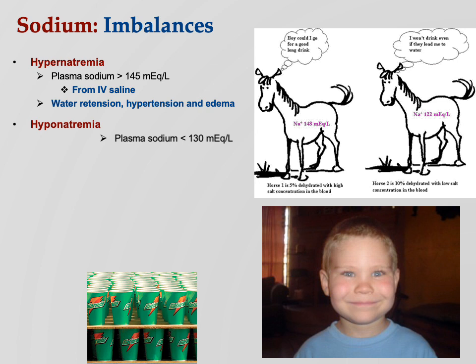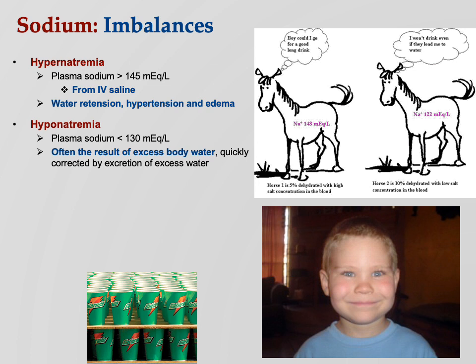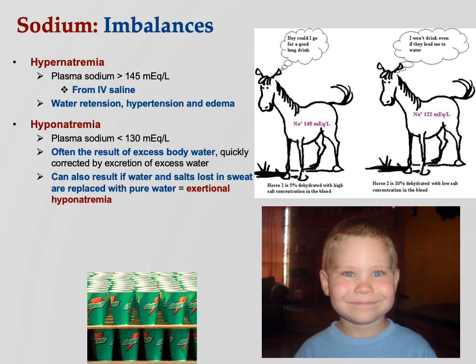Hyponatremia — plasma sodium under 130 milliequivalents per liter — is equally if not more serious. Too much water can cause this. What happens is too much water in the ECF means proportionally osmolarity decreases, so water starts going into the ICF, goes into the cells, and you end up with pulmonary or cerebral edema — that's how Jennifer Strange died. It can also result from hiking in hot weather: you sweat like crazy, lose water and salt, and drink nothing but water — called exertional hyponatremia. The Grand Canyon says that's the number one cause for emergency medical treatment, more serious than dehydration.